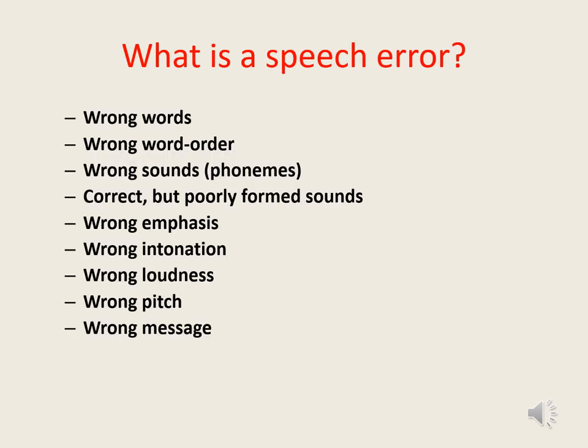So what is a speech error? There are many types of different errors that people make when they speak. Some of these errors are categorical, such as when someone accidentally says 'left' when they mean to say 'right', or when they accidentally say 'melon' when they mean to say 'lemon'. Others are more subtle, such as when a sound or word doesn't come out exactly in the way we intended. In the next few slides, I'll clarify how our attempts to repair or avoid speech errors of all kinds can lead to disfluencies and also potentially to stammering.